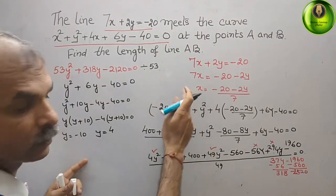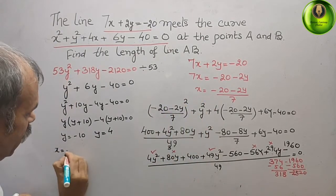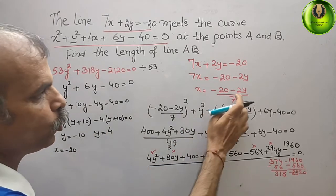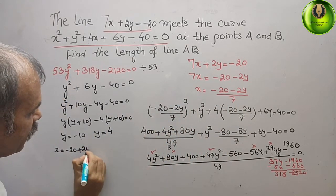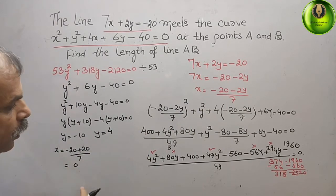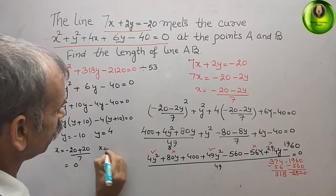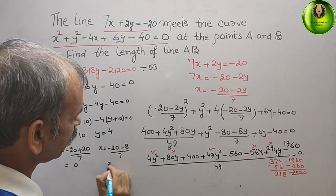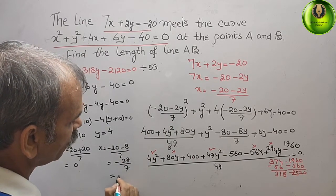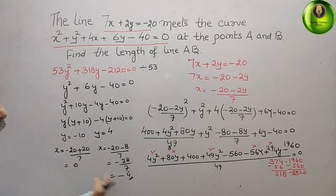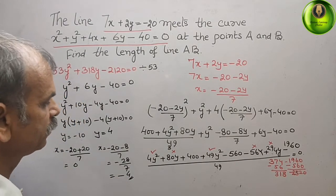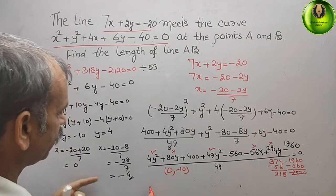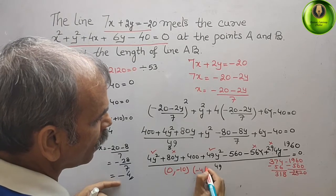So y equals minus 10 and y equals 4. Now we will find x. For y equals minus 10: x equals (minus 20 minus 2 times minus 10) over 7 equals (minus 20 plus 20) over 7 equals 0. For y equals 4: x equals (minus 20 minus 2 times 4) over 7 equals minus 28 over 7 equals minus 4. So the coordinates are (0, minus 10) and (minus 4, 4).